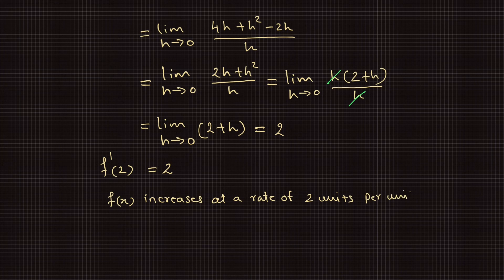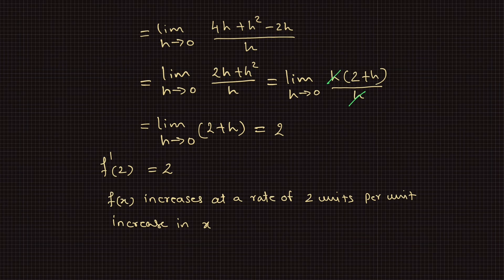This means the derivative of the function f of x at x equals 2 is equal to 2, which means f of x increases at a rate of 2 units per unit increase in x at the point x equals 2.